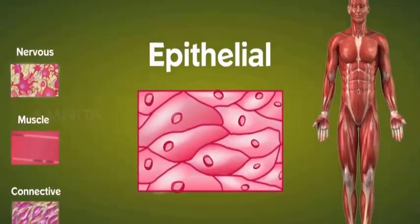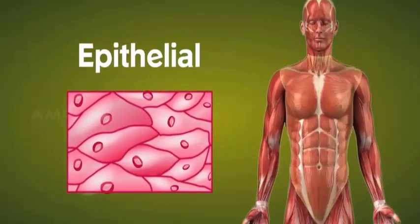Let's first look at the epithelial tissue. This tissue covers and protects the internal and external surfaces of the animal body.